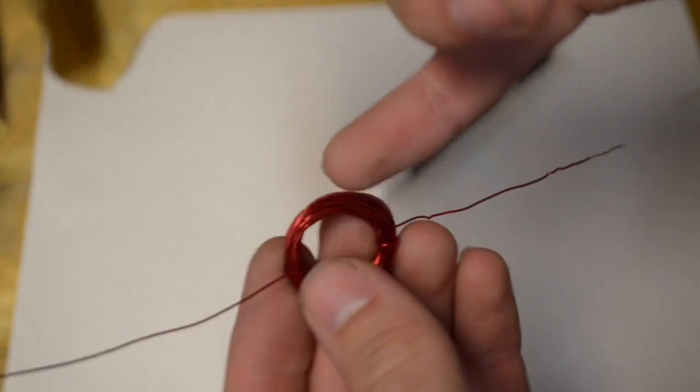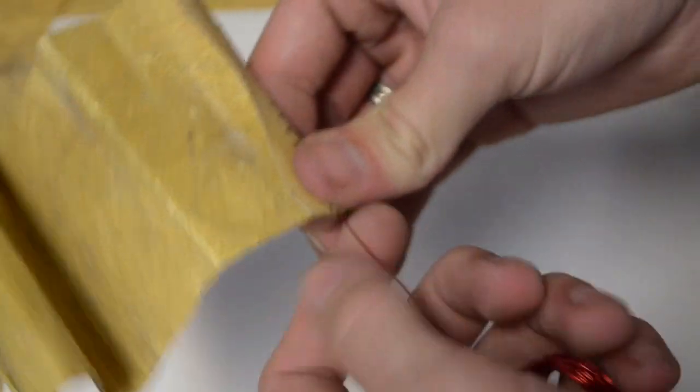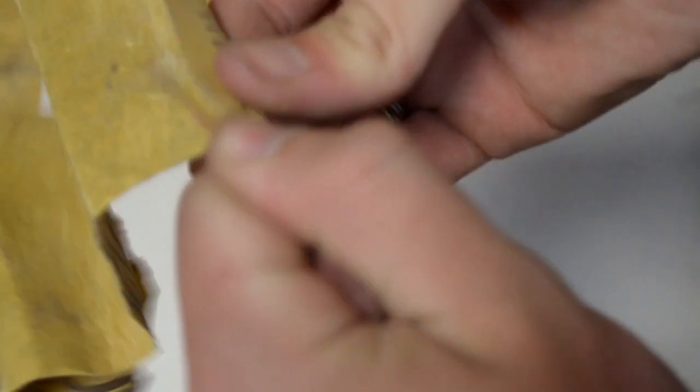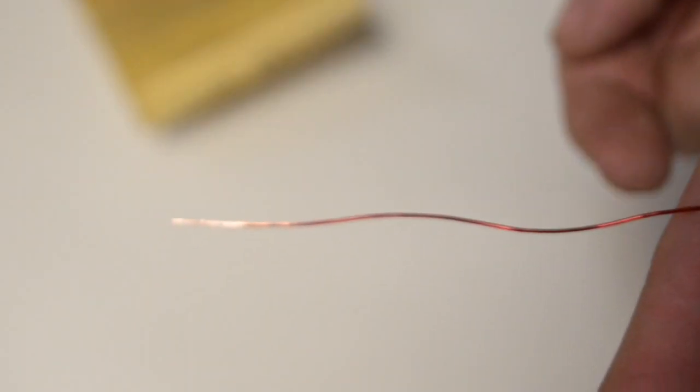Since this is magnet wire, that means that it's regular copper wire with an enamel around it that prevents it from conducting with itself. So if we're going to be connecting power to it, we need to go ahead and sand off the ends here. By sanding it, we're sanding away the enamel and exposing the copper. You should be able to notice how we have the copper exposed over here while the enamel is still over here.